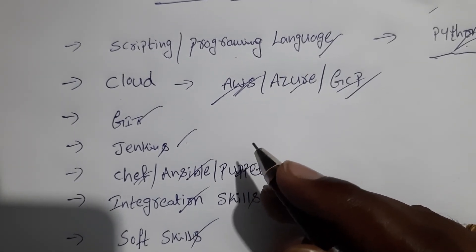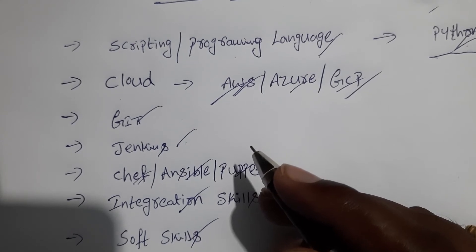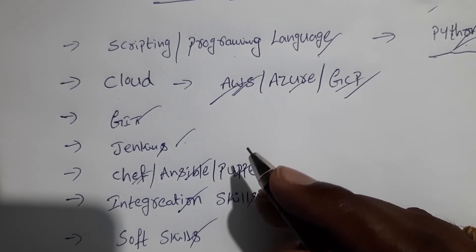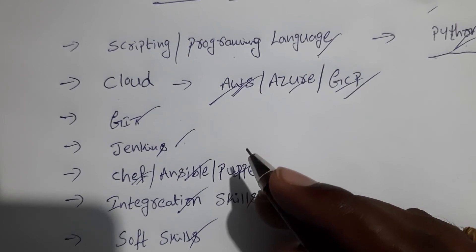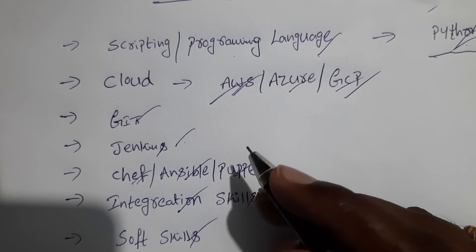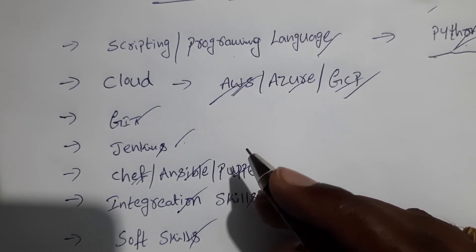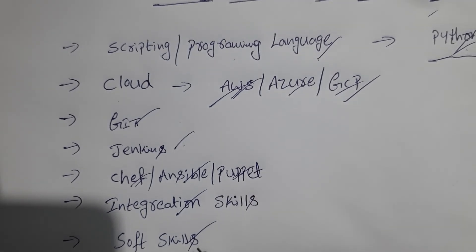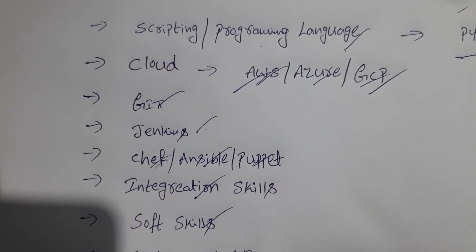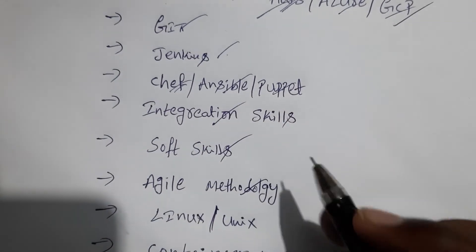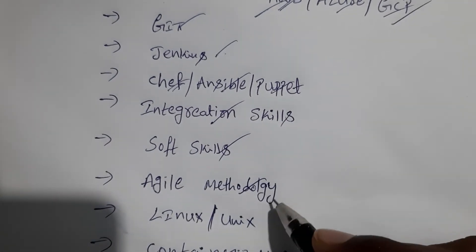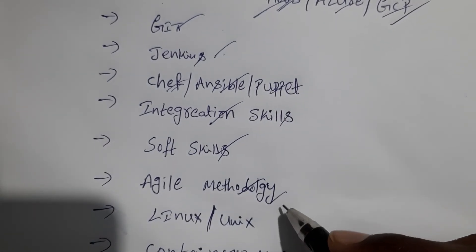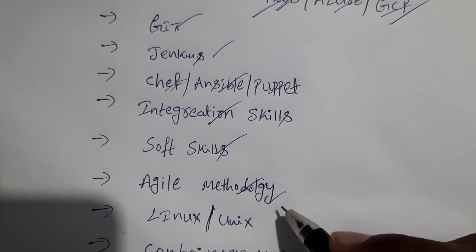The next one is soft skills. At the end of the day, DevOps is a culture of constant collaboration and communication among various teams responsible for application development and delivery. One needs to be a dynamic team player, problem solver, and quick learner. Agile methodology is also very important — nowadays all projects are delivered using agile methodology.